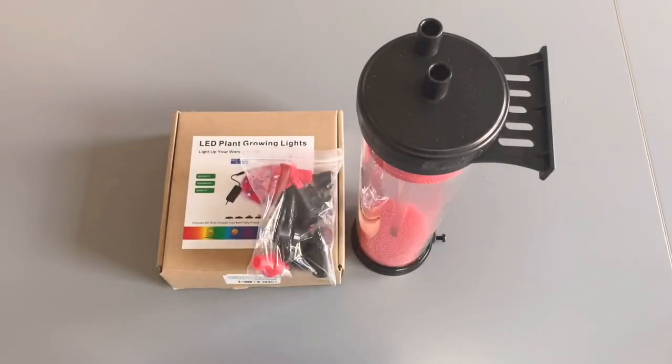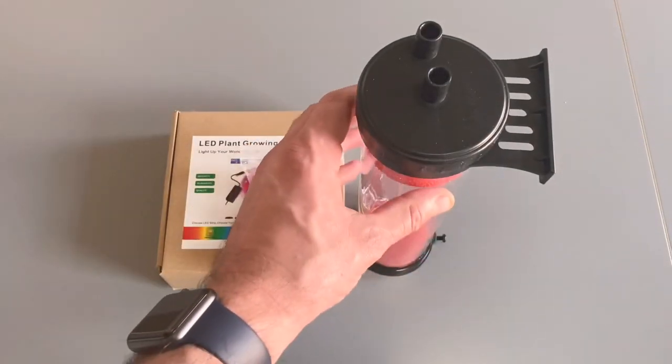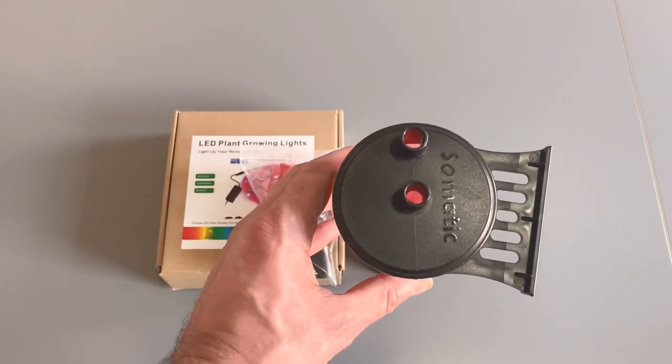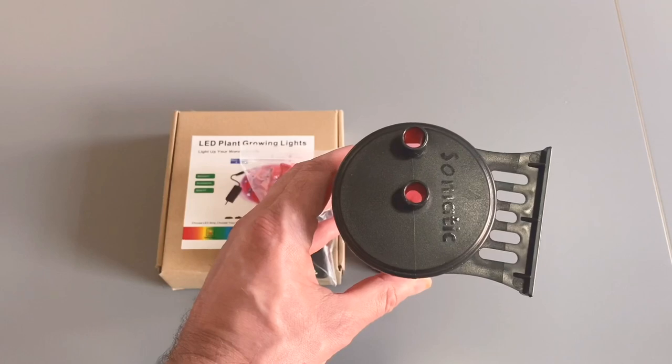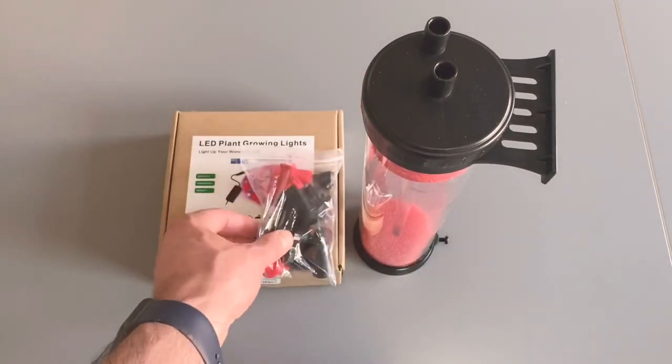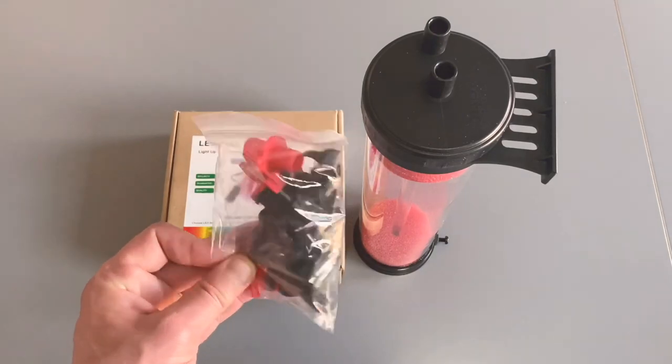This is the media reactor that I'm going to use that I had left over from the Waterbox 130.4. This is called the Somatic UF-1. It also comes with some fittings here, a flow regulator, and some clamps for your vinyl tubing.